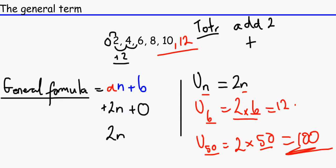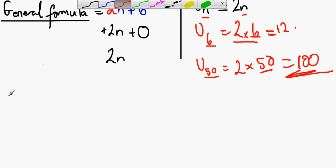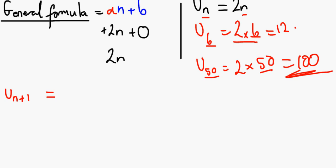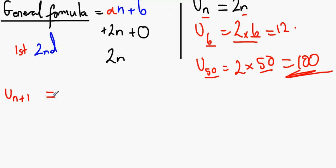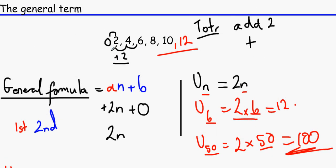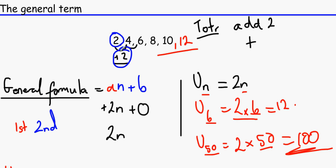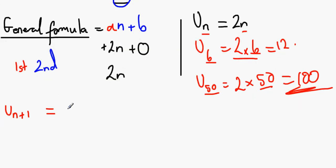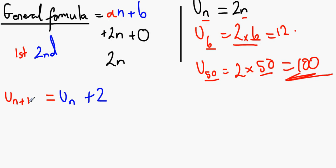To put this into practice, we're going to use UN plus one. How do we get from the first term to the second term? We add two — we use the current term and we add two. And that's what we have to write here: the current term plus two. Also, in a recurrence formula, you always have to write down what the first term is. We write U1 equals 2, because you might not have the sequence in front of you and need to know where it starts.